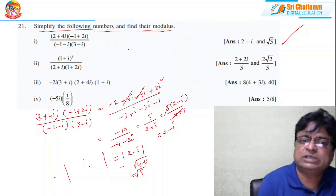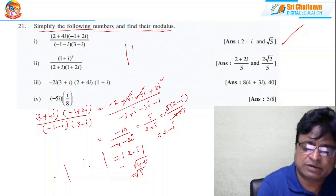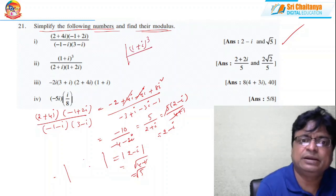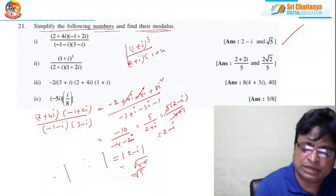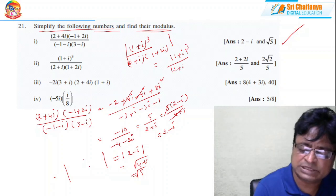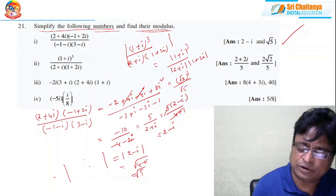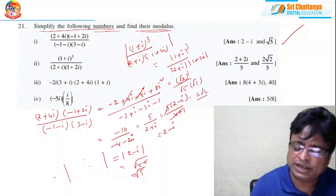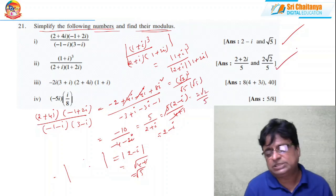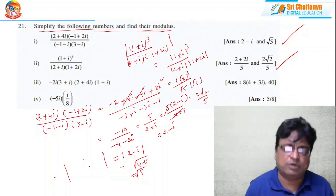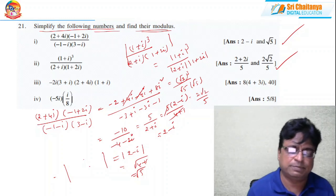For the second problem, modulus of (1 + i)³ / [(2 + i)(1 + 2i)], you can find modulus directly: |1 + i|³ / (|2 + i| · |1 + 2i|) = (√2)³ / (√5 · √5) = 2√2 / 5. Finding modulus is straightforward, but the question asks you to simplify first and then find modulus, so apply all the techniques practiced in the previous 20 problems.